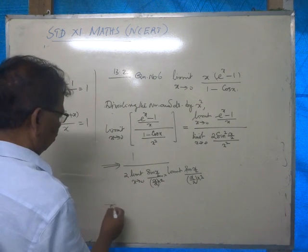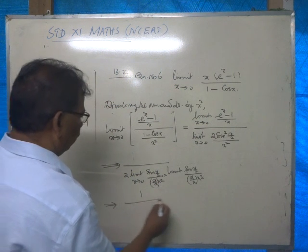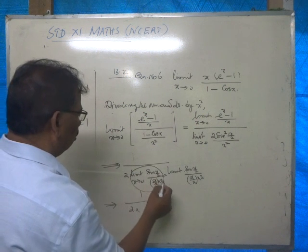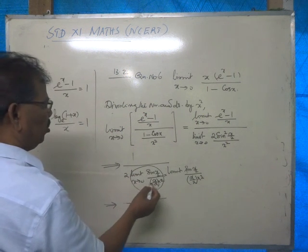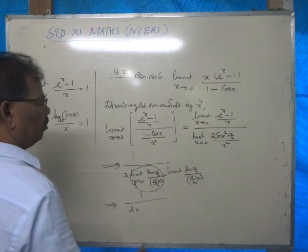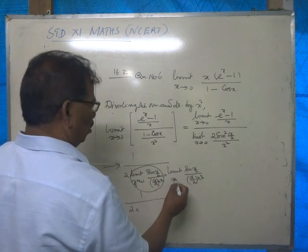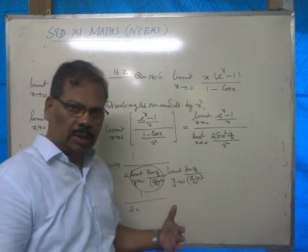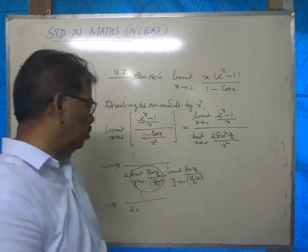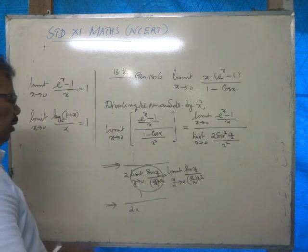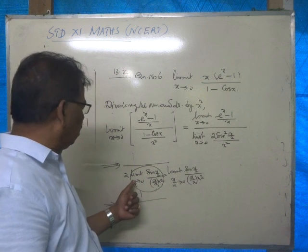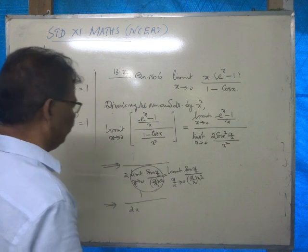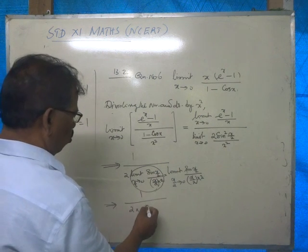Now, what is this equal to? It is 1 by 2 into 2. As x tends to 0, we can put x by 2 also tends to 0. Here also, x by 2 tends to 0. If x is approaching 0, then x by 2 will also approach 0. To get it in normal form, we put 2 times limit as x by 2 tends to 0.